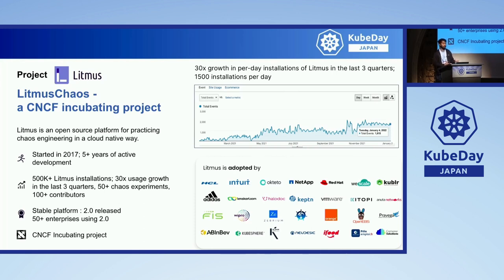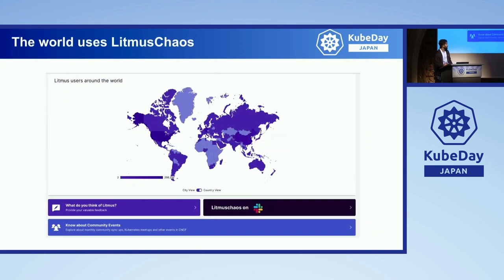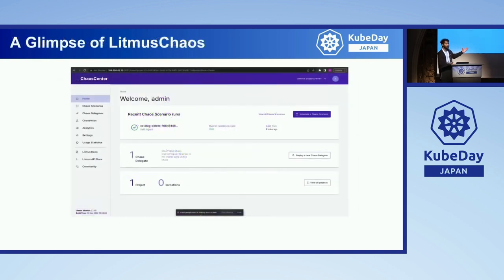Over the years, when people were skeptical, today not just large enterprises but even small enterprises are moving towards adoption of chaos — that's the exponential growth. This is the Litmus Chaos dashboard. On the homepage you can see your projects running and invite your team members. Chaos engineering is not just a process for a single SRE or team member, but a team-wide process where SREs, QA engineers, and developers all come together to ensure your systems are resilient.